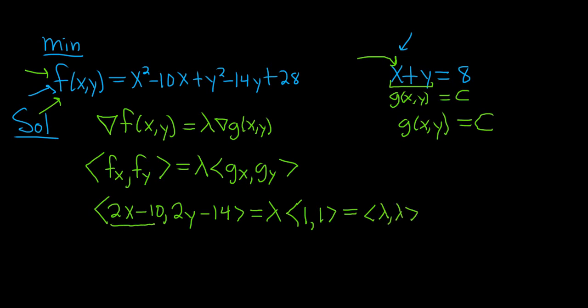Now we set lambda equal to each of these. Because these vectors are equal, lambda is equal to both pieces. So lambda is 2x - 10, and at the same time lambda is 2y - 14. Both expressions are equal to lambda, so we have 2x - 10 = 2y - 14.